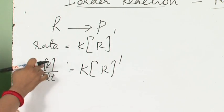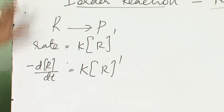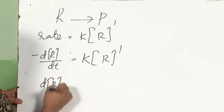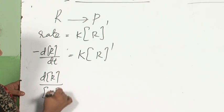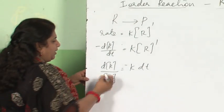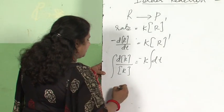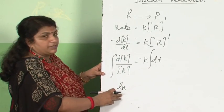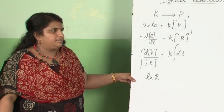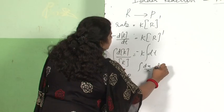This expression shows the change in concentration with time. Since it is a reactant, the amount decreases, so I write minus dR. Rearranging, I bring dR/R to one side equal to K·dt on the other. Now integrating this expression: the integral of dR/R gives the natural logarithm of R, because the integral of dx/x equals ln x.